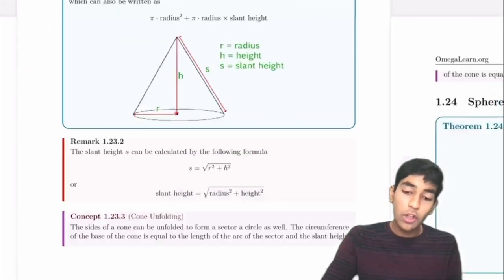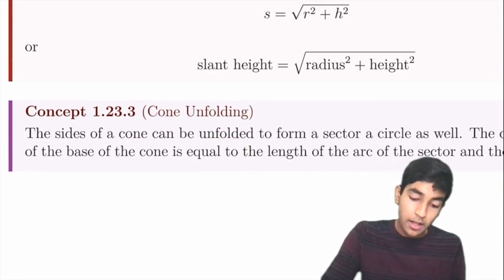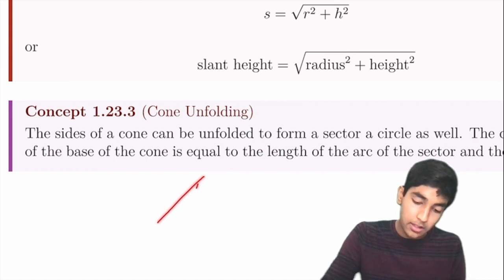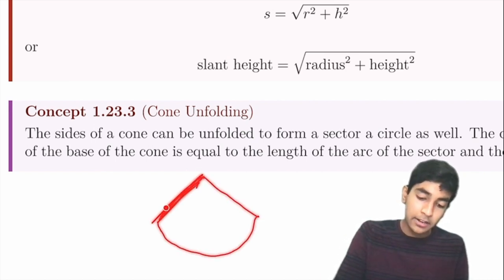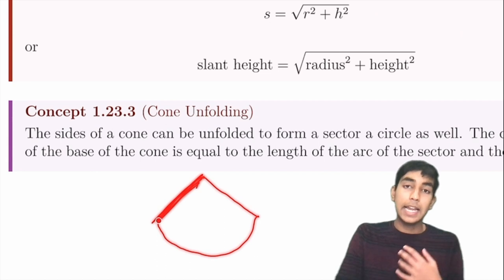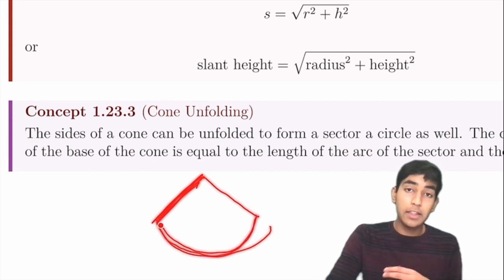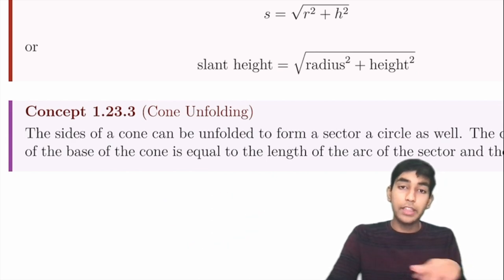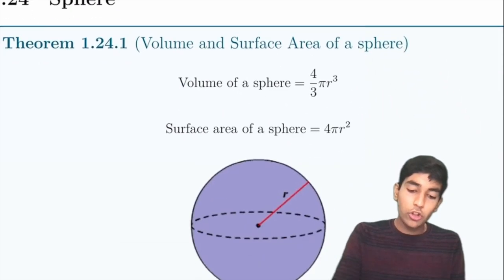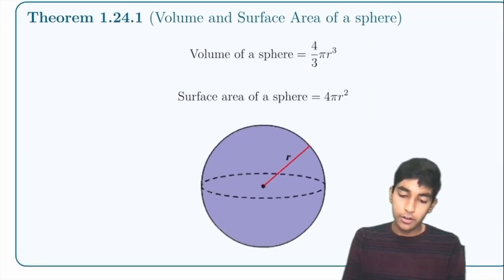A cool trick is cone unfolding: you can unfold a cone into a sector where the radius of the sector is the slant height of the cone, and the arc length equals the circumference of the base of the cone. A sphere has volume = (4/3)πr³ and surface area = 4πr².